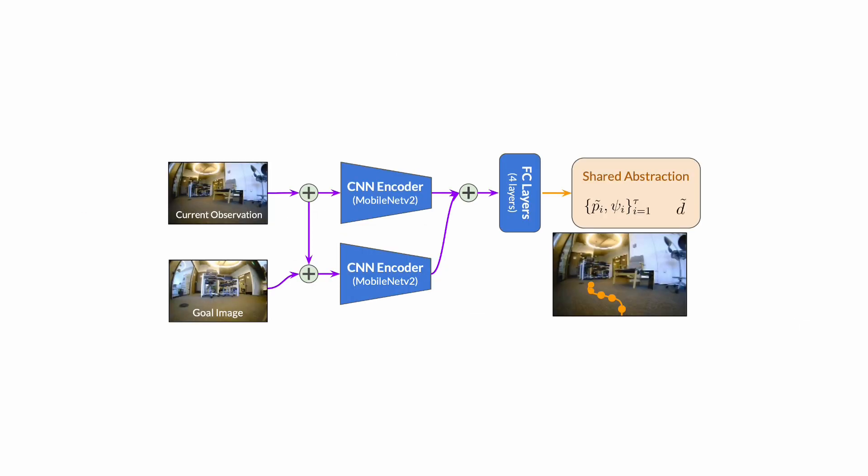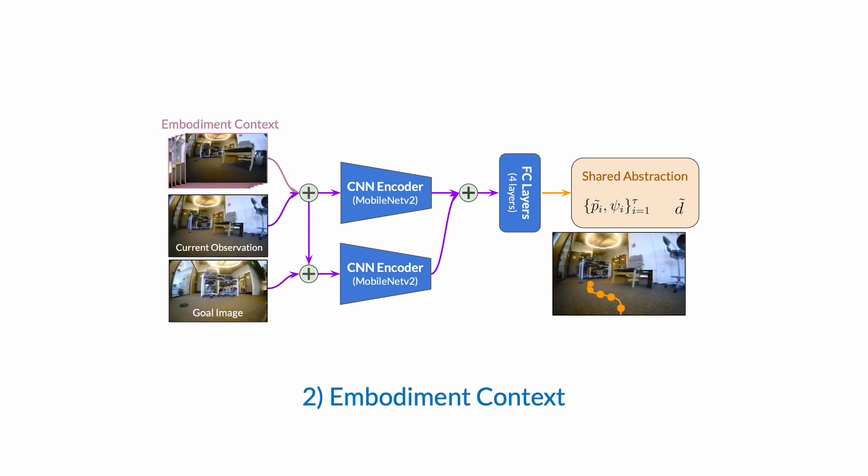We find that a simple modification to the model, conditioning it on a sequence of past observations from the robot's viewpoint, gives us a mechanism to provide an embodiment context to the GNM and condition the model on these capabilities. We find these two simple modifications essential to enable training on diverse datasets and deploying to new robots.